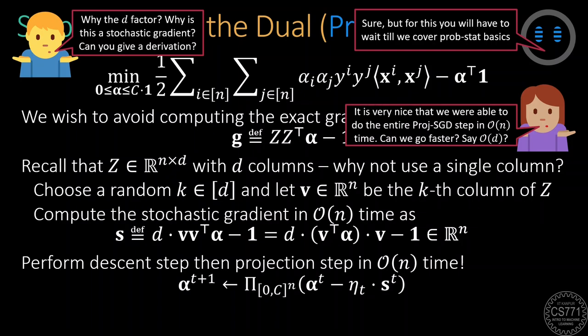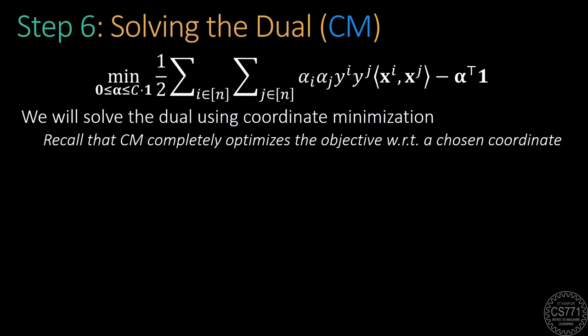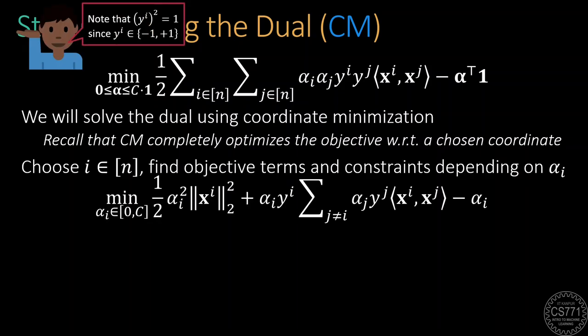Since the descent step and the projection step are already possible in order n time, this means that we can do a projected SGD step with the dual problem in just order n time. Certain details of the stochastic gradient calculation will make more sense to you once we have covered the basics of probability and statistics. For now, let's get back to the problem. Then we get even faster steps. For example, it is common for d to be smaller than n. Wouldn't it be super awesome if we could get a descent step done in just order d time? It turns out that this is indeed possible by using coordinate minimization.